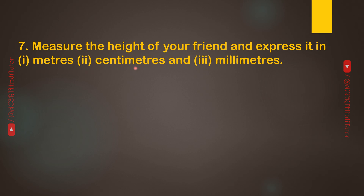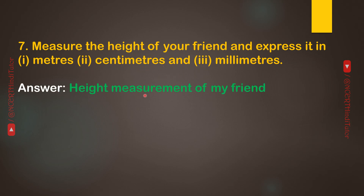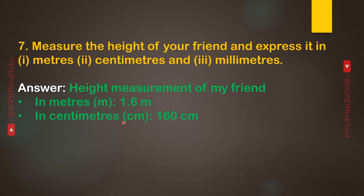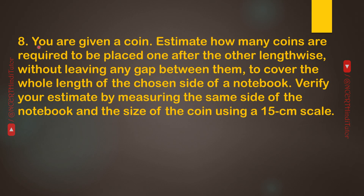Question 7: Measure the height of your friend and express it in 1st meters, 2nd centimeters, and 3rd millimeters. Answer: Height of my friend — In meters: 1.6 m. In centimeters: 160 cm. In millimeters: 1600 mm.